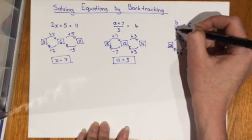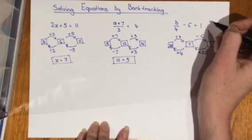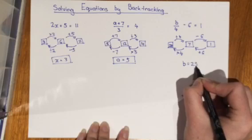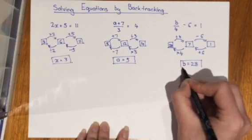Checking my answer, 28 over 4 is 7. 7 minus 6 is 1. So clearly write your answer under your working out. That b would have to equal 28.